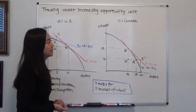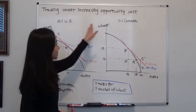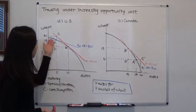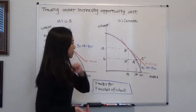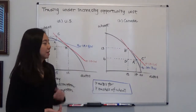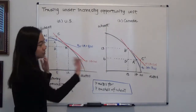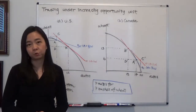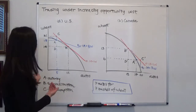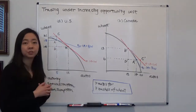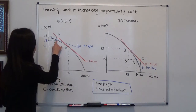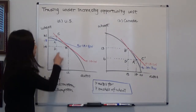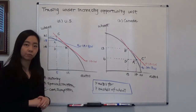We'll look at the example for both the US and Canada. You can see that they both have a bowed-shaped production possibility curve. If we don't trade with each other, then we'll have to consume whatever we produce. Suppose the US is going to consume and produce at point A, where we have five automobiles and 18 bushels of wheat.